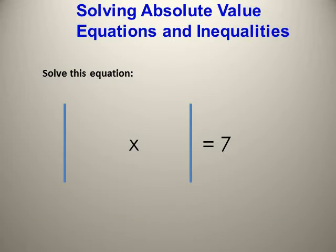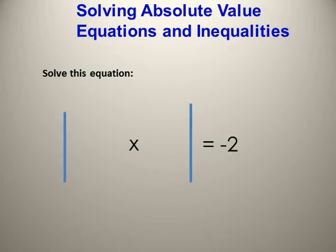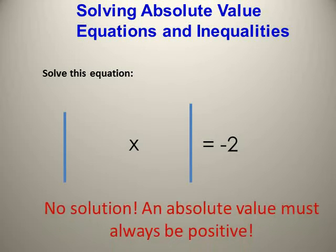Solve the equation. If |x| = 7, that means inside the absolute value x equals 7 or negative 7. If |x| = −2, of course we need to find x, but in this case there is no solution because no absolute value can equal a negative number.